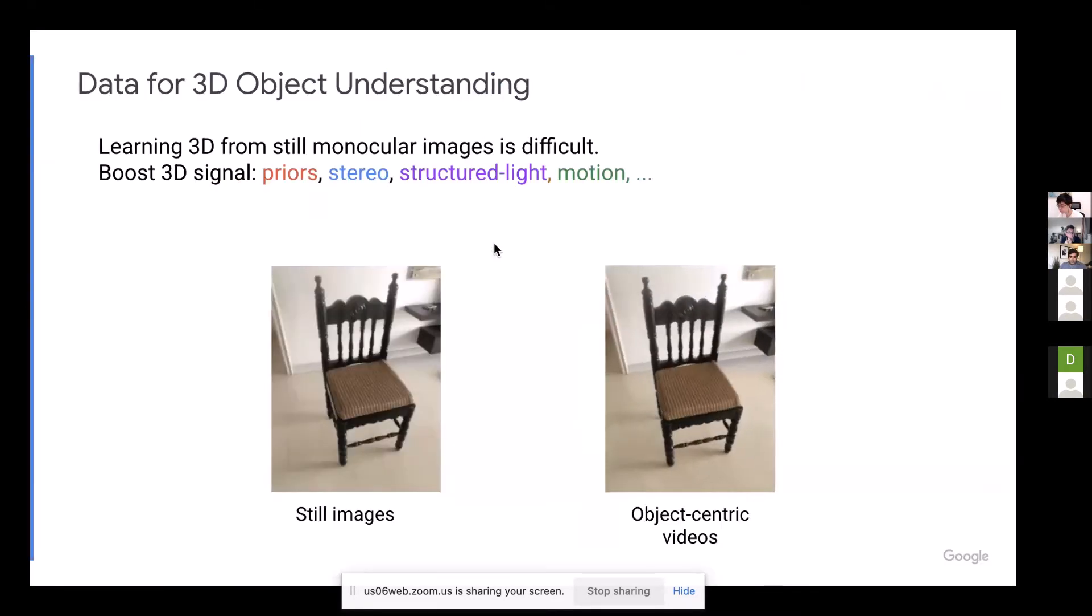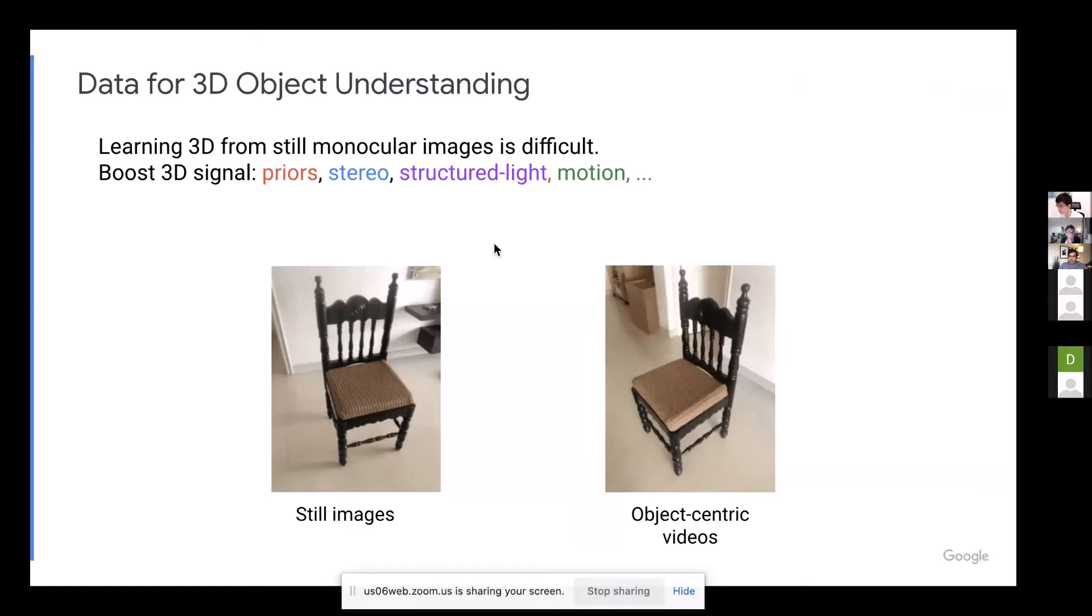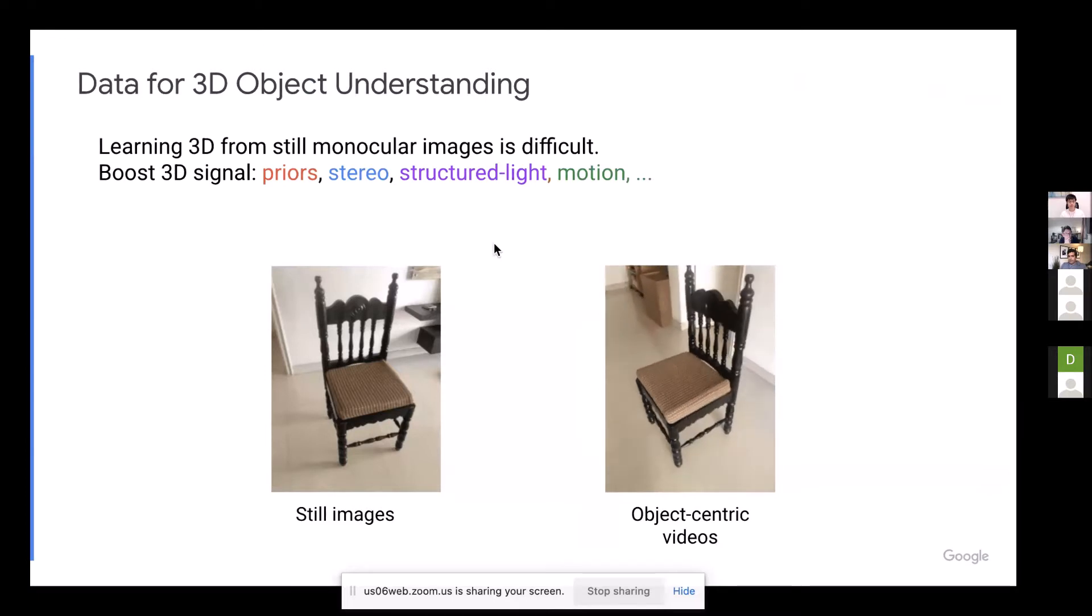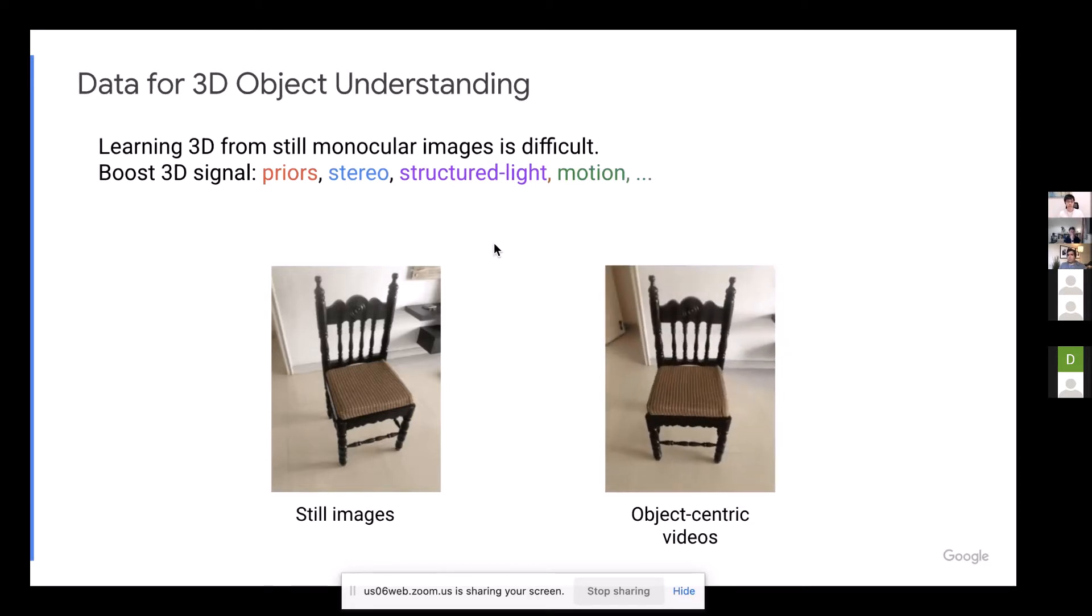So going back to the 3D object understanding problem, recall that our goal is to understand the 3D pose or 3D shape from a still image, from a still monocular RGB image. But this is a very, very difficult problem to solve. And maybe understanding 3D from 2D images is difficult. We were looking for a way to boost the 3D signal in these images. And there are a lot of ways you can do this. Like many folks, they would incorporate different priors, they would use stereo images, structure of light or motion. We opted to use motion, and that's how you go from still images to object-centric videos.